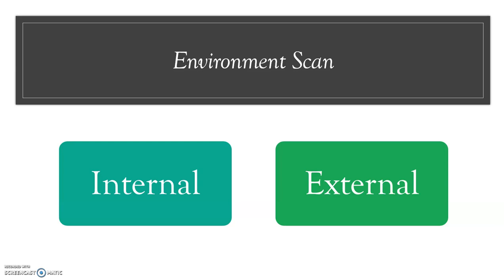Externally, we look at nearby universities' sustainability initiatives, the number of universities that have pledged carbon neutrality, and the percentage of high school students who incorporate green campuses as part of their decision for picking a university. We also consider STARS, the UN's 17 Sustainable Development Goals as a measure of goals we can implement ourselves, what new technologies are being used for sustainability, and how trends in sustainability infrastructure give tax benefits to universities.